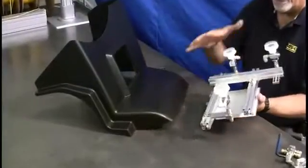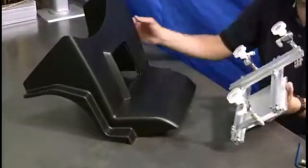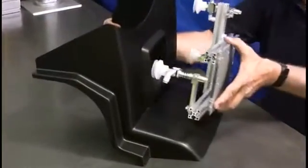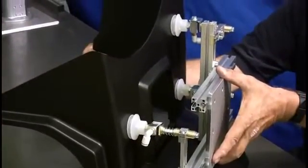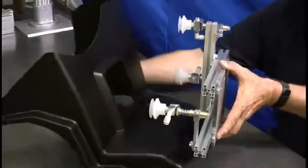We now have a basic 3-cup end-of-arm tool. Remember, with any flat surface, you need a minimum of 3 contact points to have a stable support system for the part. The vacuum cups are now aligned with the part.